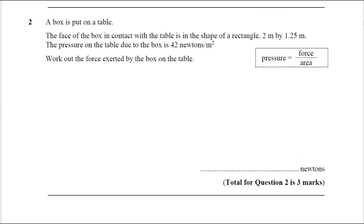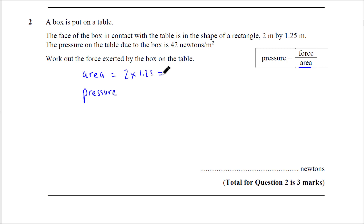Question two. A box is put on a table. The face of the box in contact with the table is a rectangle 2 metres by 1.25 metres. We have a pressure; work out the force. So we have an area to work out: 2 by 1.25. It is a calculator paper so you can use your calculator, but it's just doubled — that's 2.5 metres squared. The pressure is in metres squared so we don't need any conversions. That's 42.